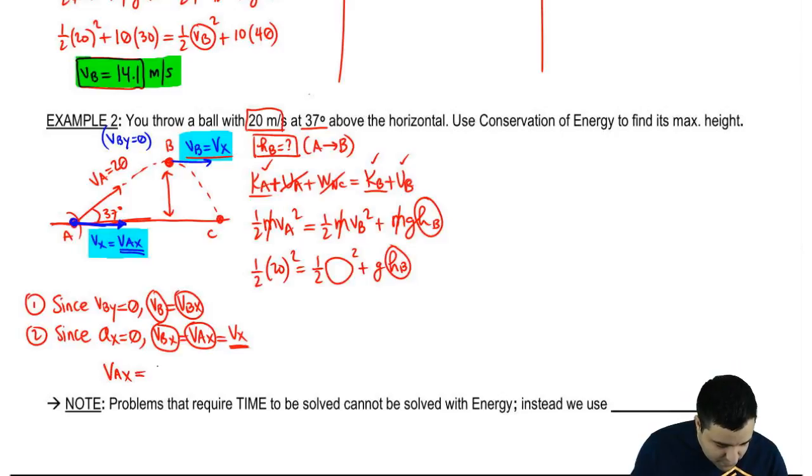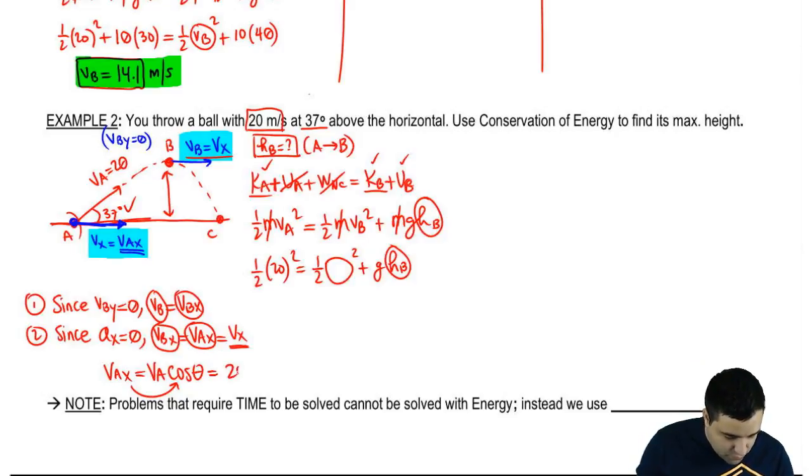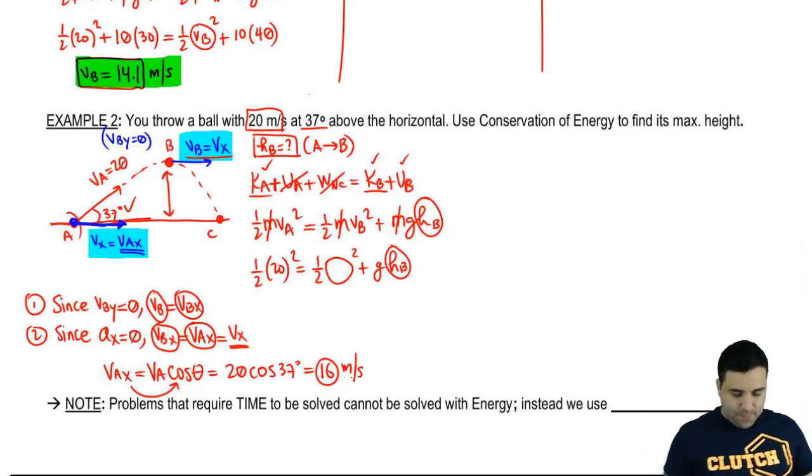VAX is VA cosine of theta. X goes with cosine as long as the angle is against the horizontal, which it is. And we can plug this in. This is 20 cosine of 37, and 20 cosine of 37 is going to be 16 meters per second. Cool? So, 16 is a number that goes right here. Now, let's continue this over here.